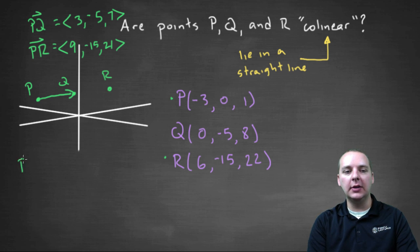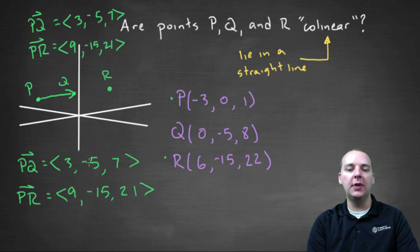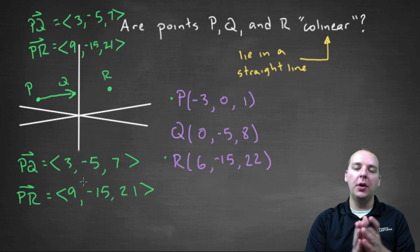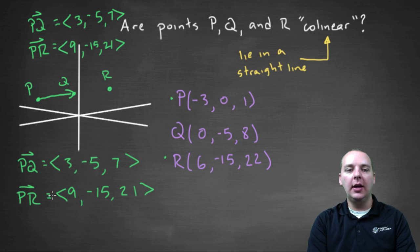Now look at these two vectors. We have PQ = <3, -5, 7> and PR = <9, -15, 21>. They're not the exact same vector, but are they going in the same direction? Yes. How do I know? PR is simply three times vector PQ—it's a scalar multiple of PQ.